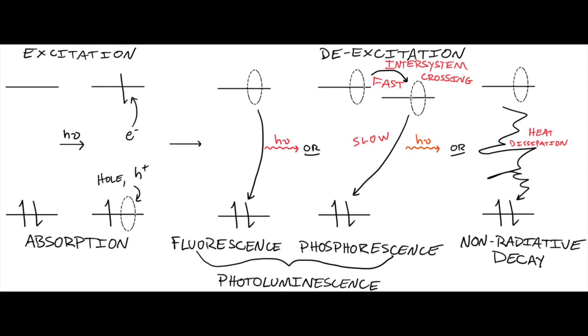Non-radiative decay means that through a bunch of collisions, the electron just returns to the ground state without doing anything useful. Another thing that can happen is that two molecules can be close to each other — one excited, one not. The excitation energy can transfer from one to another, either by re-emission by the first molecule and reabsorption by the second, or through non-photon near-field coupling that allows excitations to hop from one molecule or nanoparticle to another.